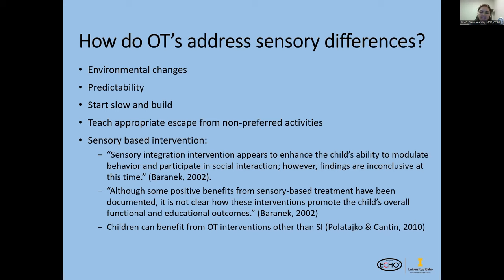How do we address sensory differences? We talk about environmental changes when possible — is their room too busy? Do we need to change how they're sitting at the dinner table to reduce distractions so they can focus on eating? If you can't always change the environment — like in classrooms — we come up with different options. Predictability helps some kids: just knowing something is coming, like 'I'm going to turn the blender on,' gives them a chance to go to another room or just be prepared. Starting slow and building: if they don't like dirty hands, I won't shove their hands in the gooeyest texture immediately. I'll start with drier materials like sand or corn and slowly build up to wetter textures.